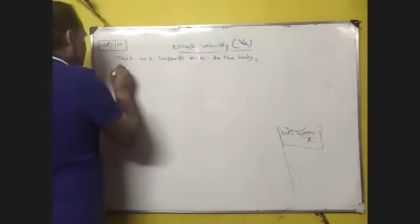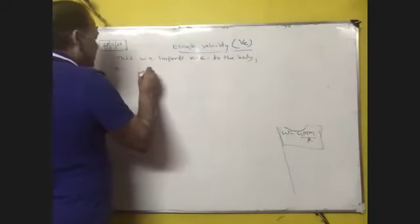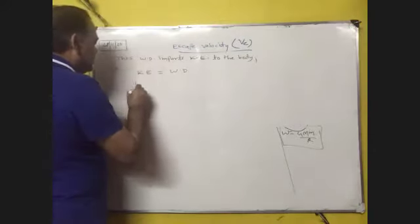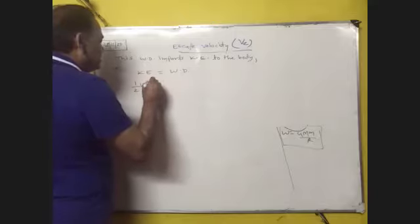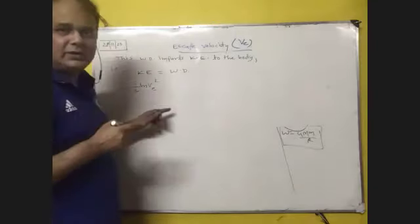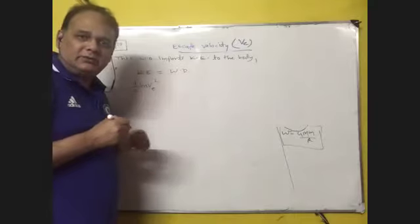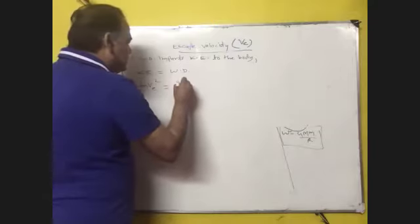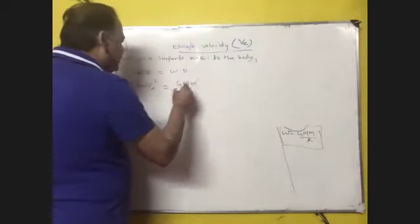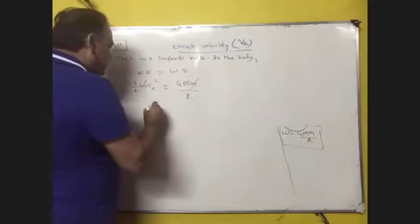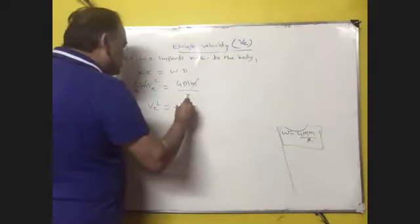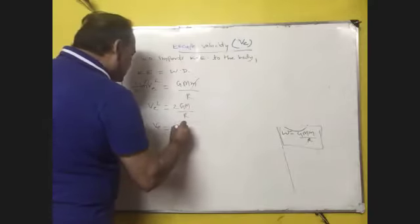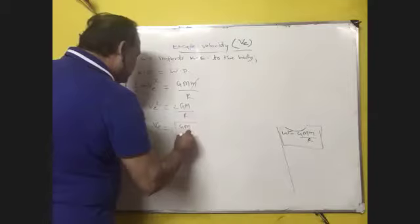Kinetic energy is equal to work done, so kinetic energy formula half m v square, where v means escape velocity because this work done provides escape velocity. Work done is GMm upon R, so v square equal to 2GM upon R.